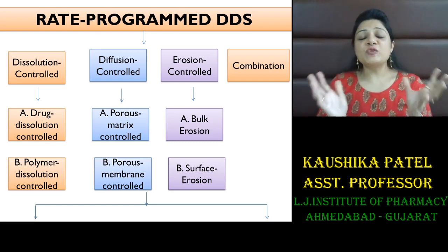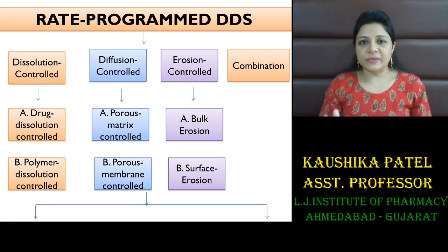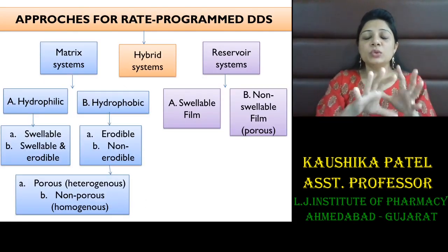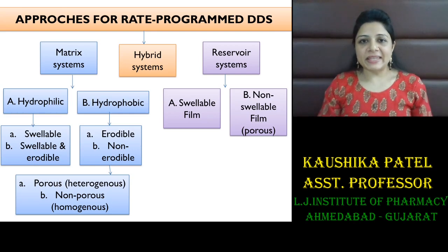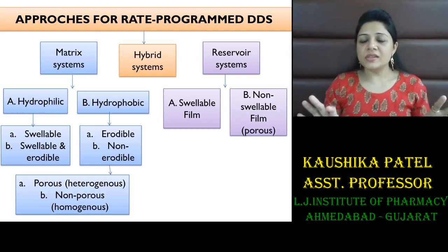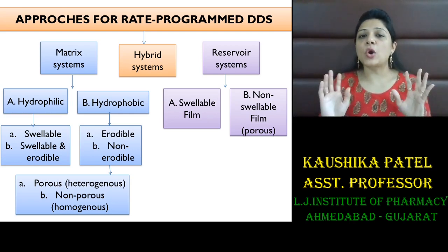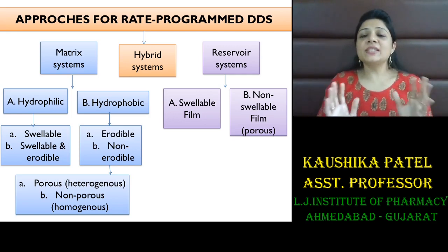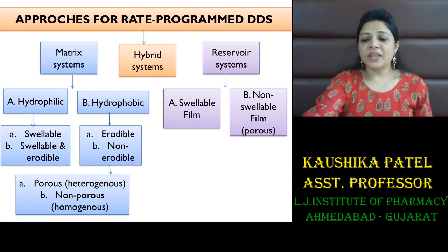A combination of two or all three of the approaches is also possible. To achieve any of these mechanisms, you can have a matrix system, a hybrid system, or a reservoir system. This will be discussed in part two.